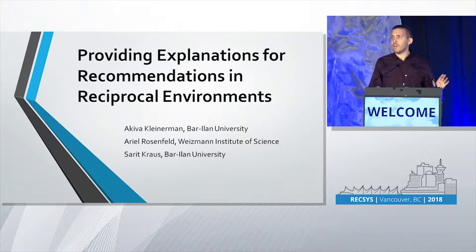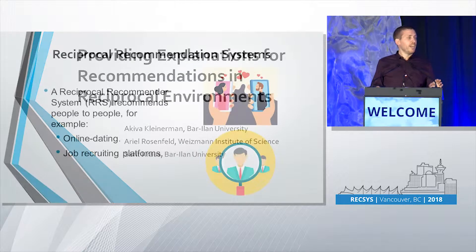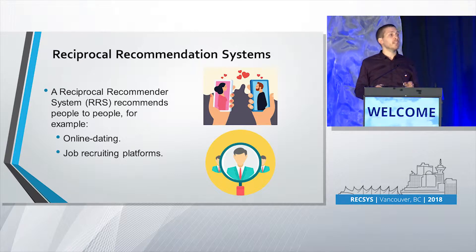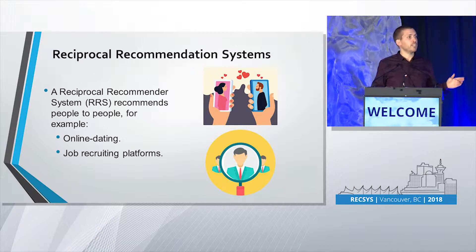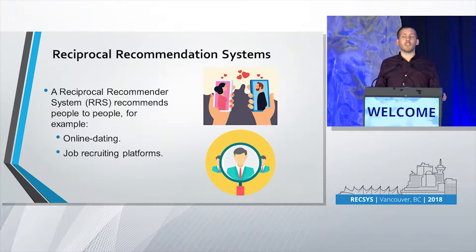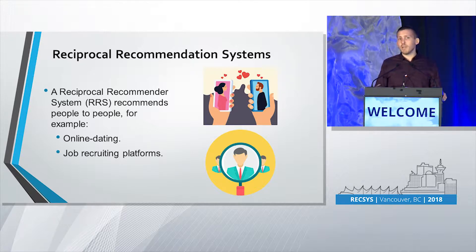So I didn't find my match in this online dating site, but at least it led me to this research. Reciprocal recommender systems are a type of recommender systems which recommend people to people, unlike other recommender systems which recommend items to people. Potential applications for reciprocal recommender systems are online dating services, job recruiting platforms, roommate matching, and many more possible applications.